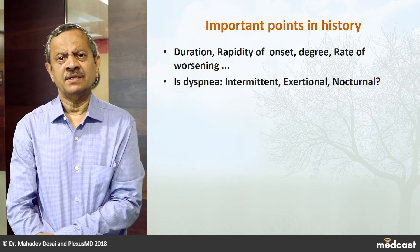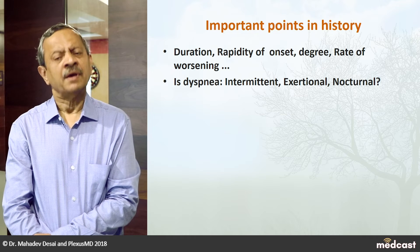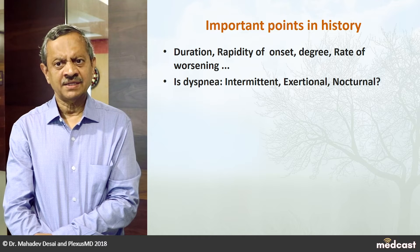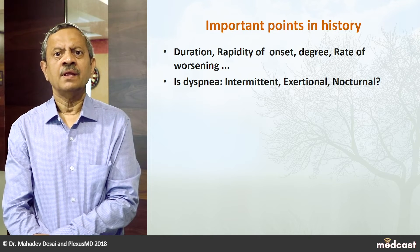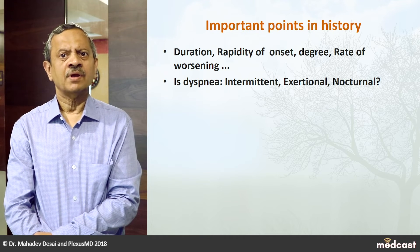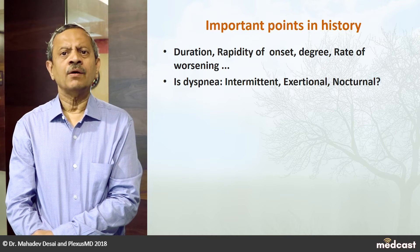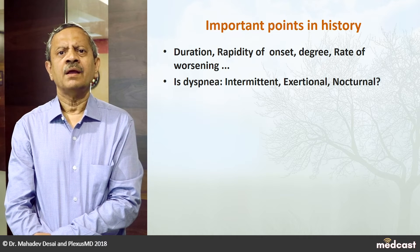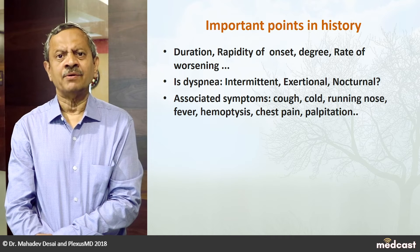History taking — if the patient is too breathless, we cannot take the history in detail. But if the patient has breathlessness of gradual onset, always spare enough time for history. In an emergency too, we can at least inquire about the duration of breathlessness, the rapidity of onset, and the degree — whether the patient is orthopneic. What is the rate of worsening? Anybody who has breathlessness that worsens in a matter of minutes — we have to think of conditions like acute severe asthma, pneumothorax, pulmonary embolism, or cardiac etiology. Is the dyspnea intermittent, as typically occurs in asthma? Does it occur on exertion, as in COPD or cardiac conditions or anemia? Or is it nocturnal? Nocturnal dyspnea makes us think of bronchial asthma and cardiac left heart failure.